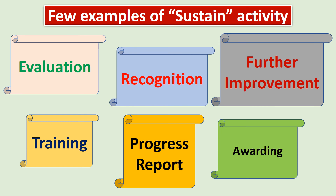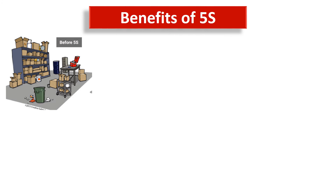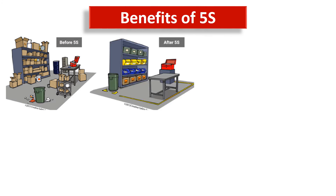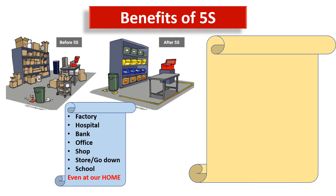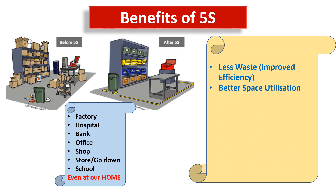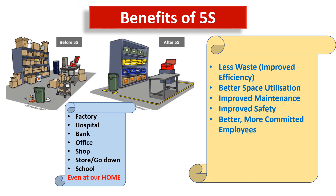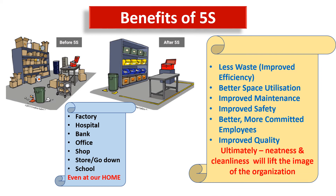Let us see a few examples of sustained activity: evaluation, recognition, further improvement, refresher training, progress reports, awarding, etc. The benefits of 5S can be seen clearly — a before 5S photograph is haphazard, and the after 5S photograph shows things kept properly. 5S can be applied in a factory, hospital, bank, office, shop, store, godown, school, and even at home. Through 5S we can get less wastage, improved efficiency, better space utilization, improved maintenance, improved safety, better and more committed employees, and improved quality. Ultimately, neatness and cleanliness will lift the image of the organization.